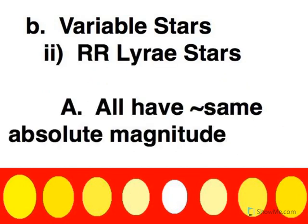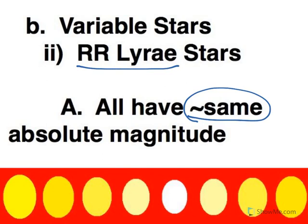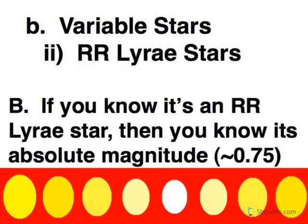In the case of RR Lyra stars, what makes these so useful is that they all have essentially the same absolute magnitude. Recall, absolute magnitude is always the tricky one when it comes to measuring distances to stars. So these are very handy, since as long as you know it's an RR Lyra, you know its absolute magnitude. It turns out that the absolute magnitude of all RR Lyra stars is approximately 0.75 magnitude.